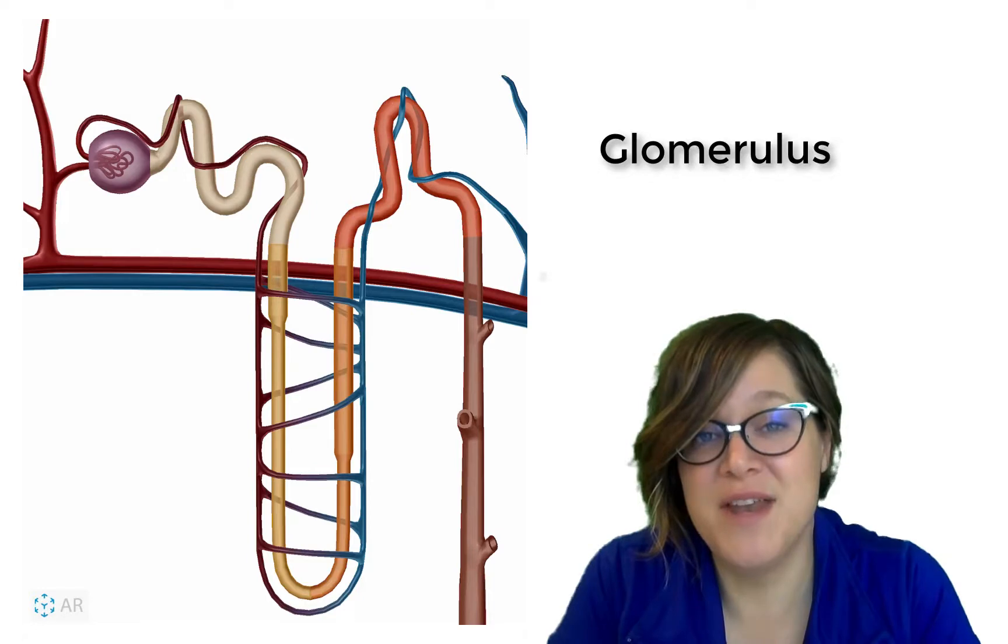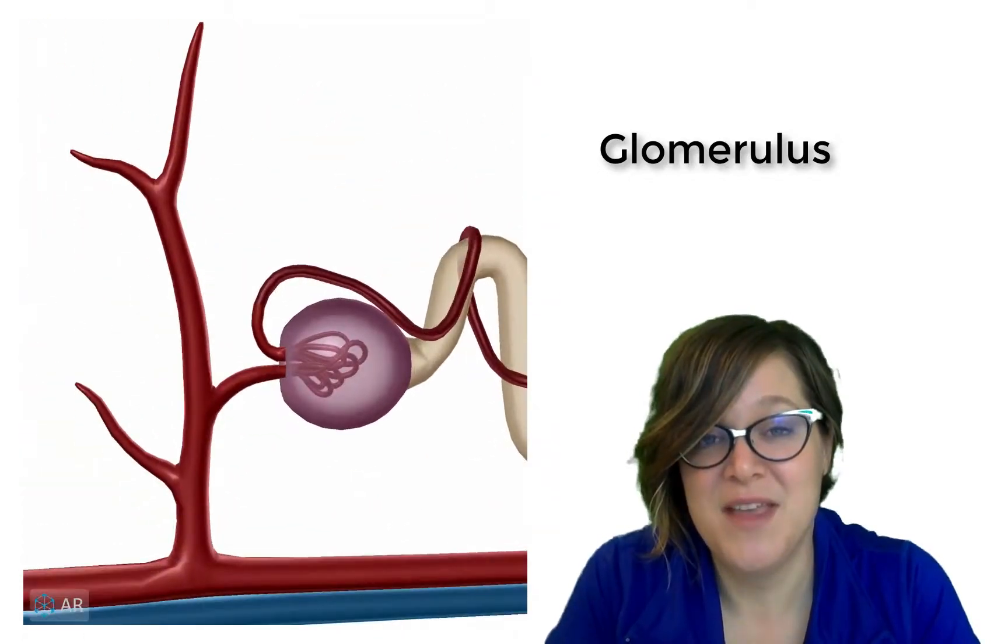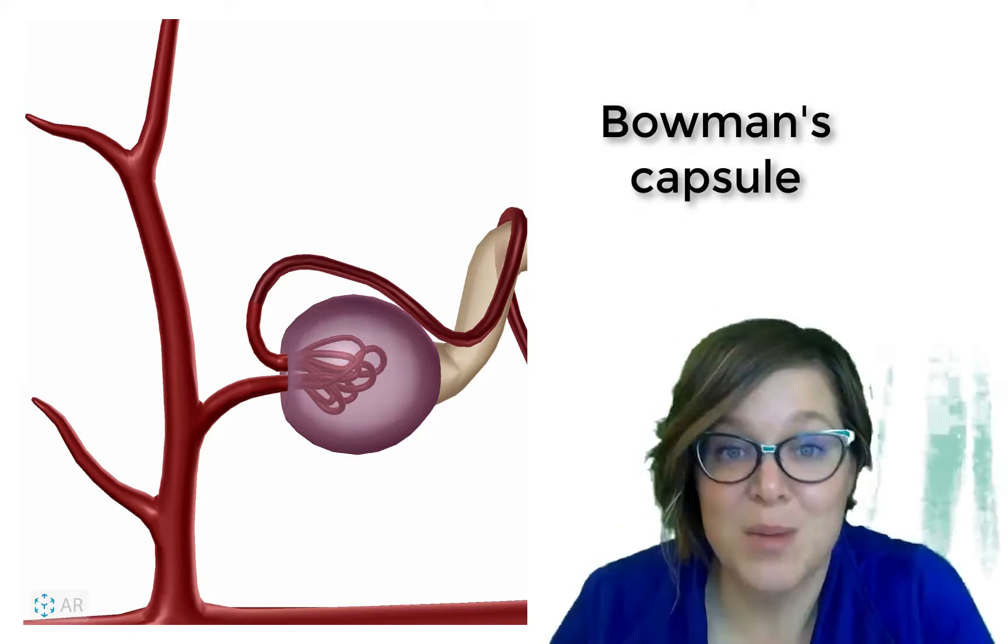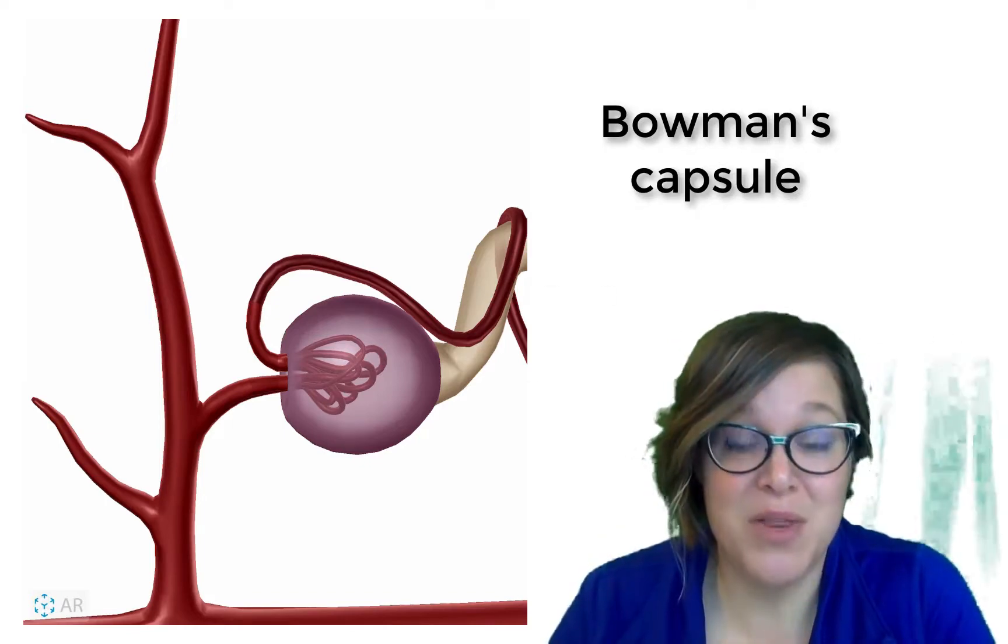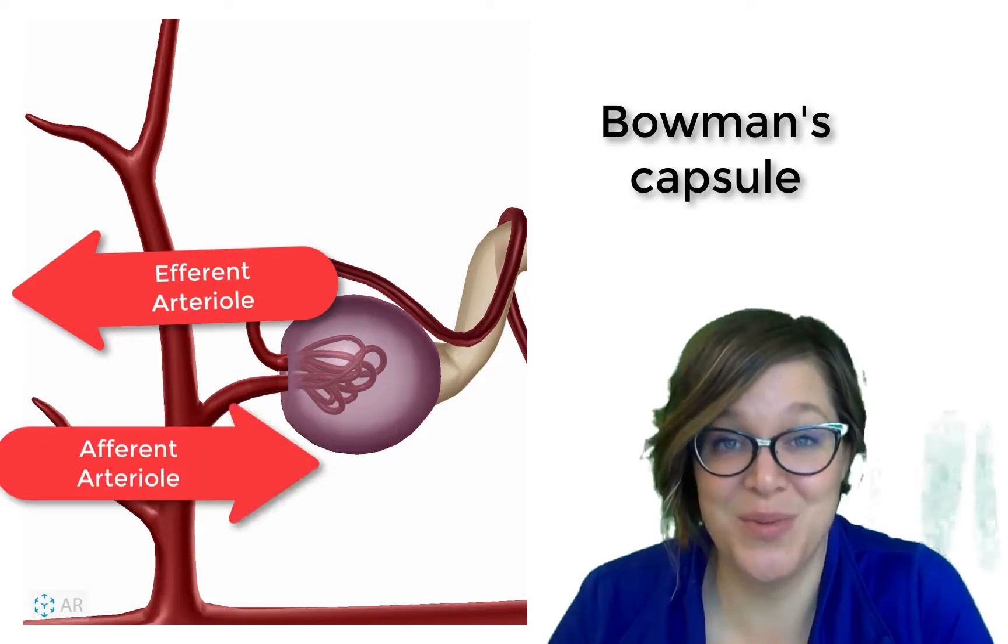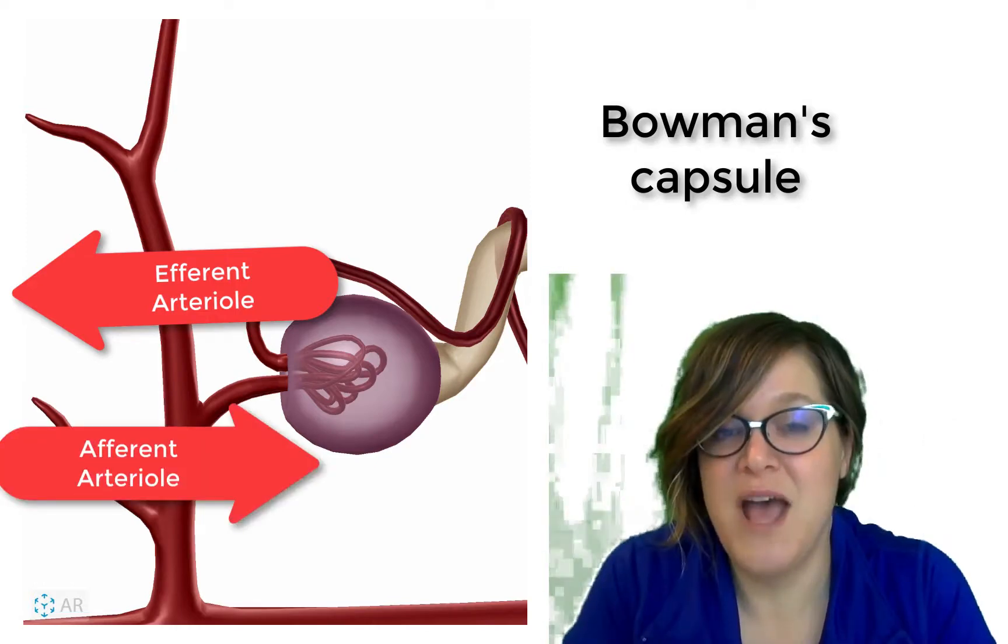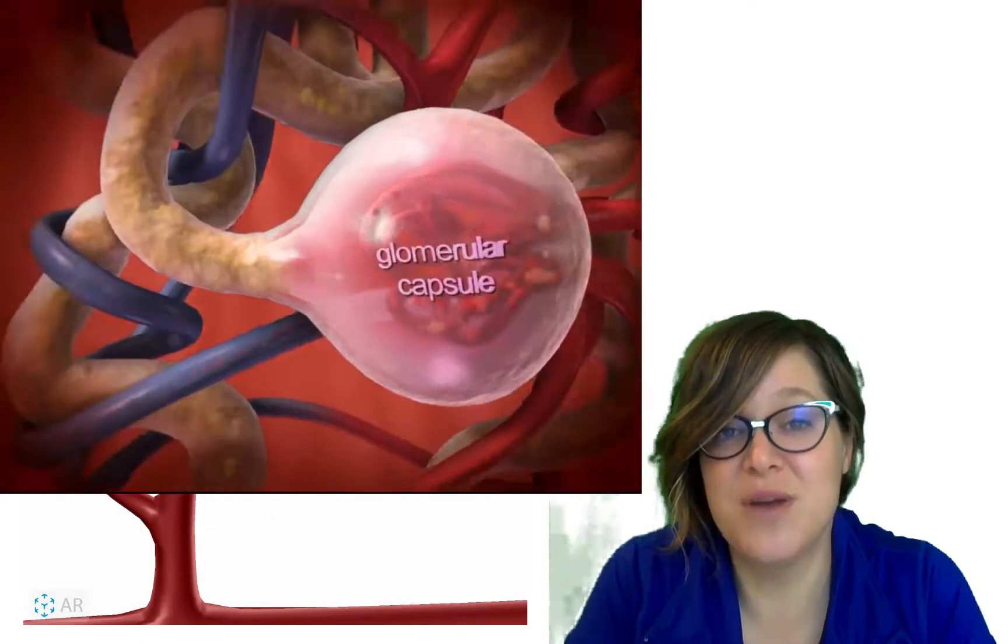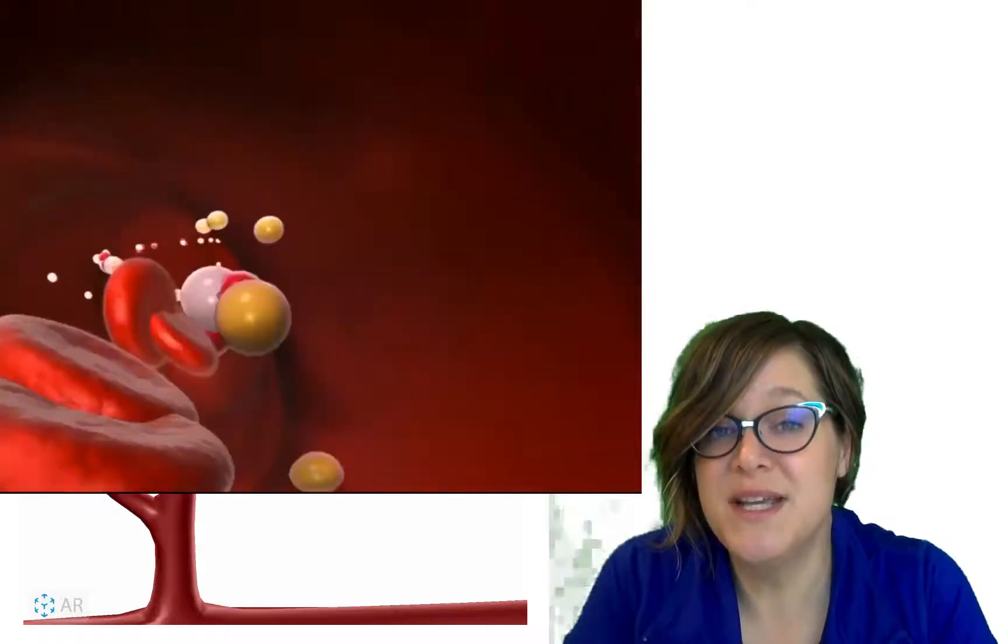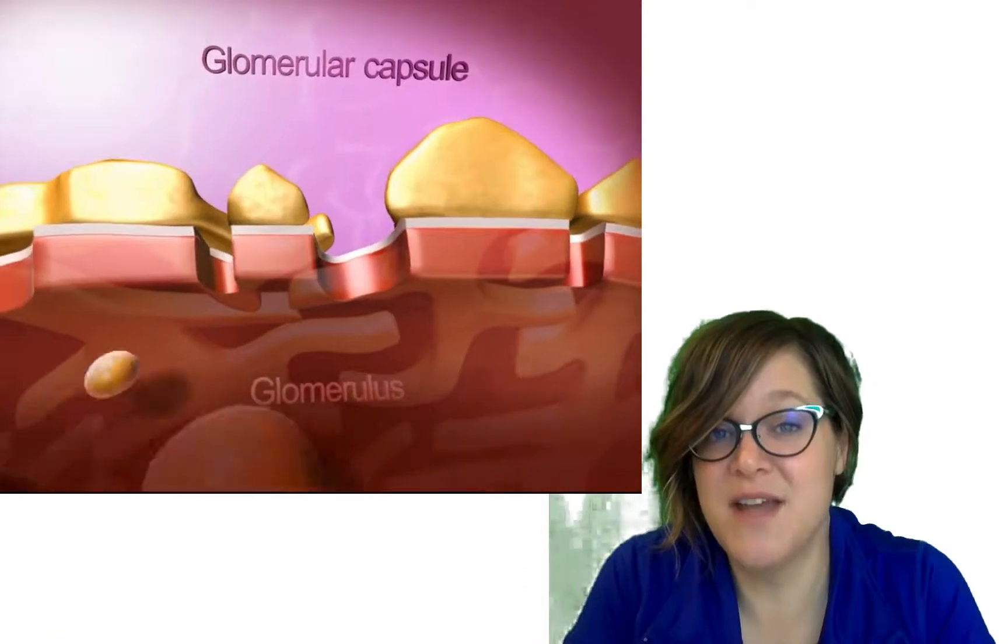The first part of the nephron is called the glomerulus. This is sort of a knotted capillary that's located inside a structure called the Bowman's capsule. Blood is going to enter this capillary through the afferent arteriole and exit through the efferent arteriole. What happens in that glomerulus is that the pressure from the blood entering that capillary pushes fluid into the Bowman's capsule. From there, that fluid can go through the rest of the nephron.